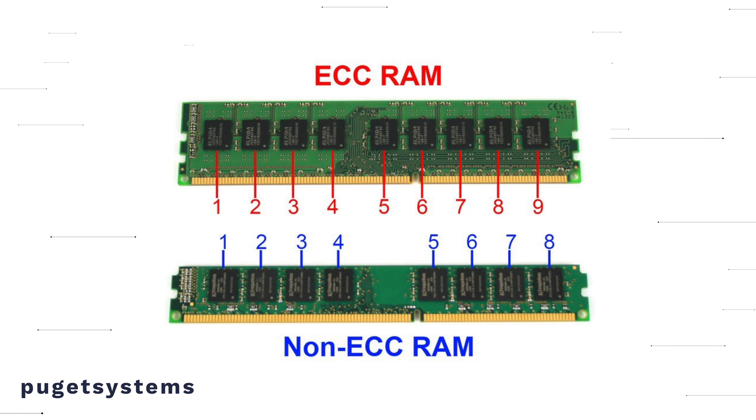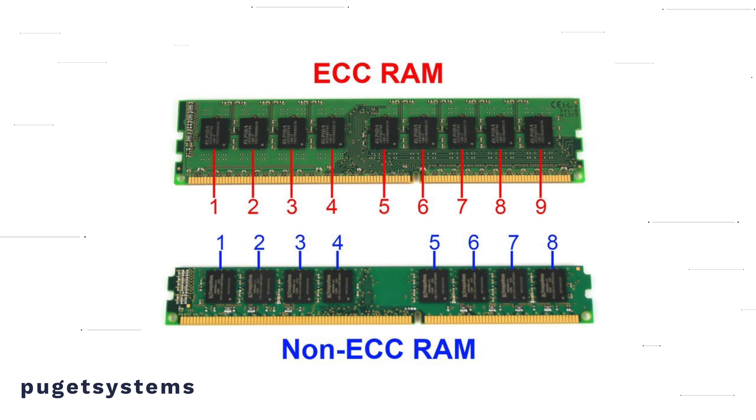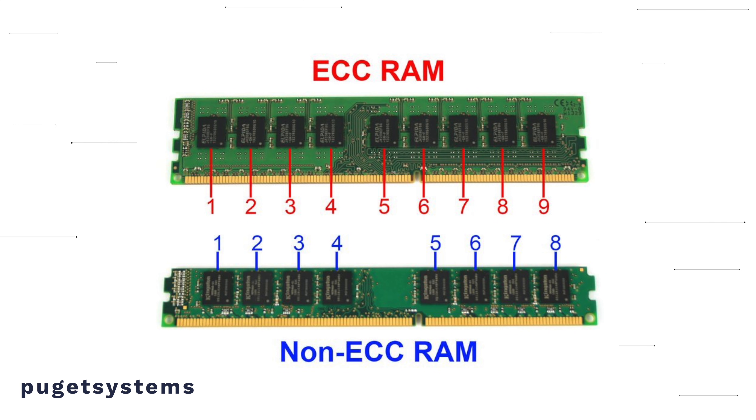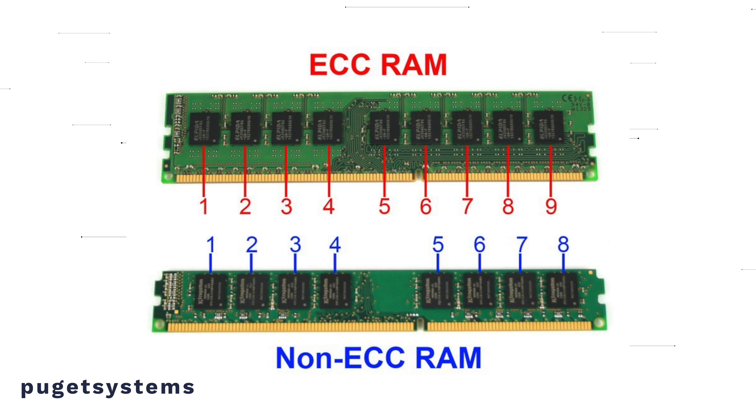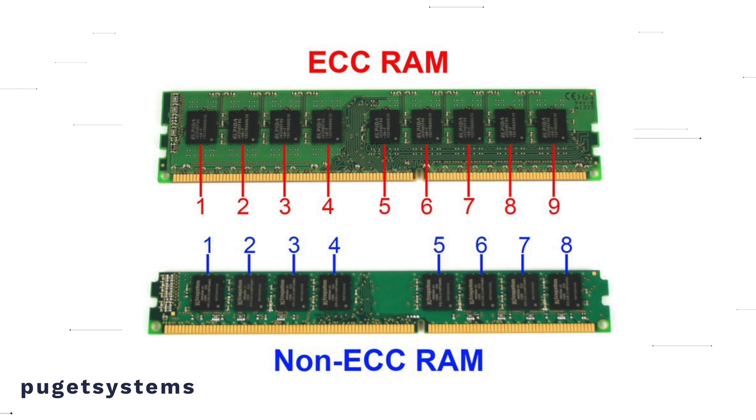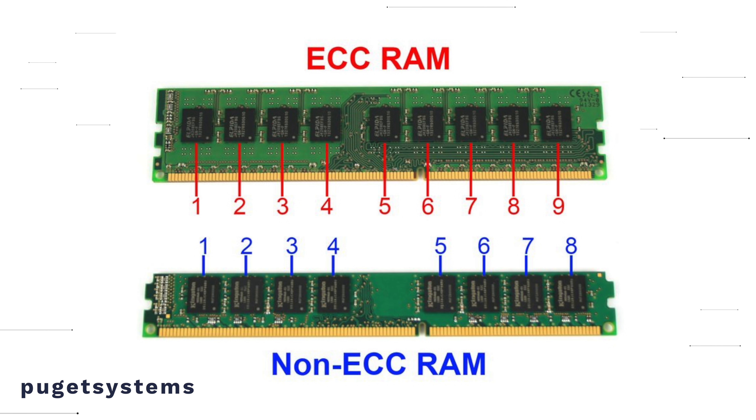ECC memory and non-ECC memory are also physically different from each other. ECC memory modules have a chip count divisible by 3 or 5 when you count the number of black chips on each module, and ECC typically has an extra chip compared to its non-ECC counterpart. That extra chip is the error detection and correction chip, where the extra computation for error correction happens. The remaining chips store data sent to the CPU, similar to a non-ECC memory stick.